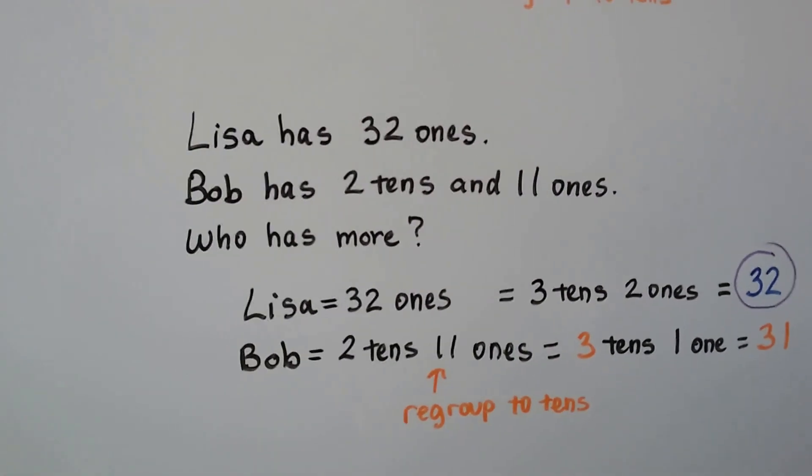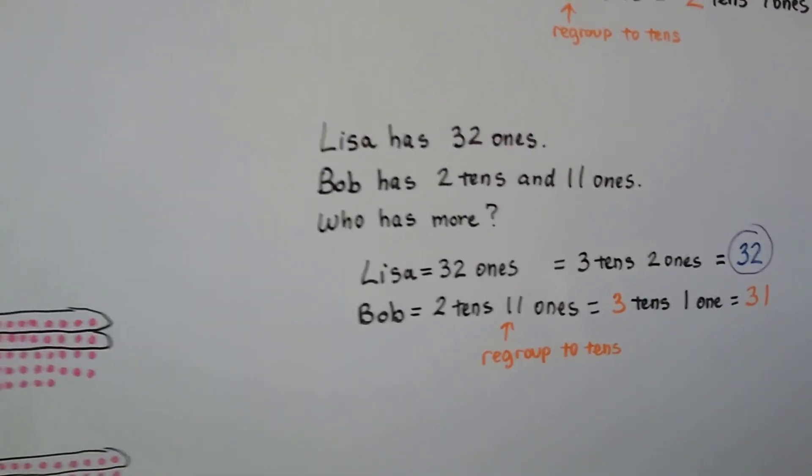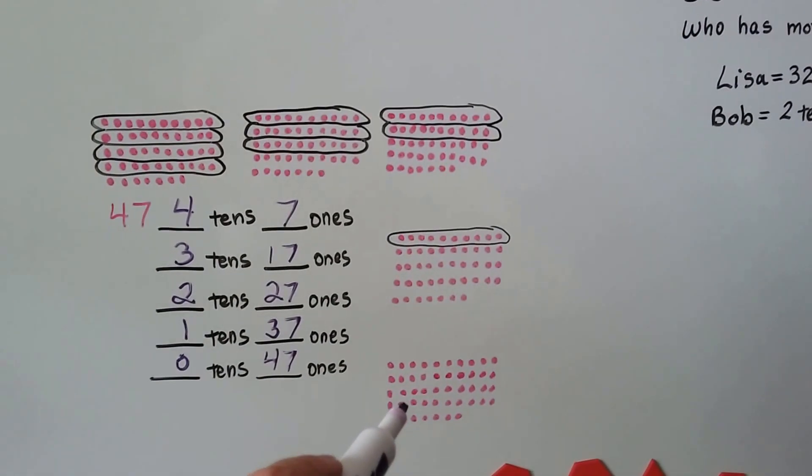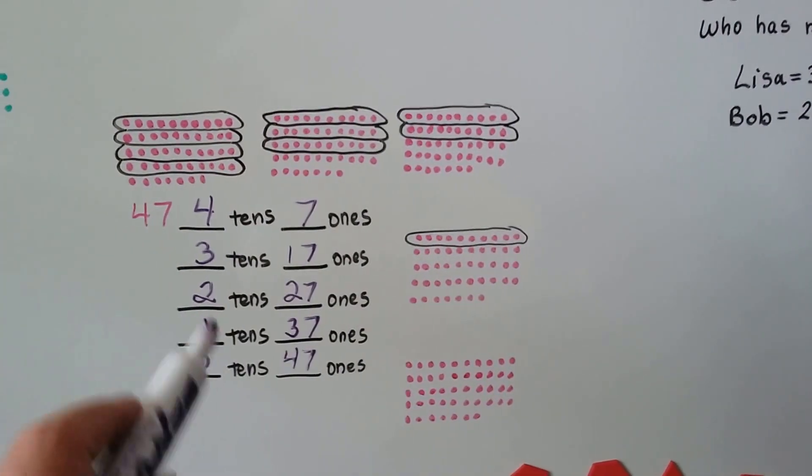So we can regroup tens and ones. When we get enough ones, we can take it to the tens place, can't we?